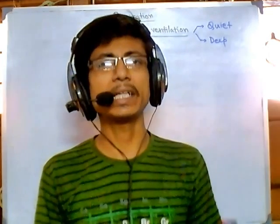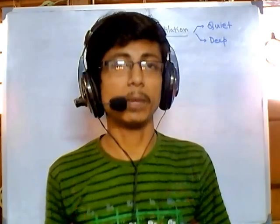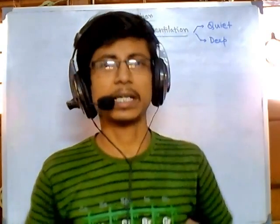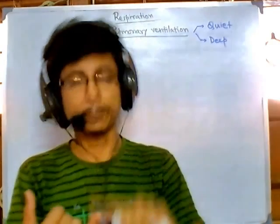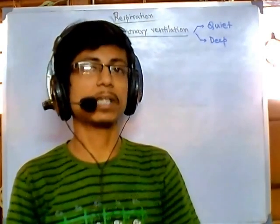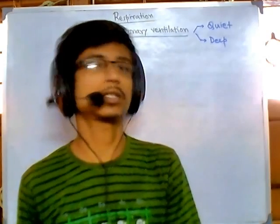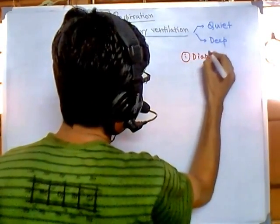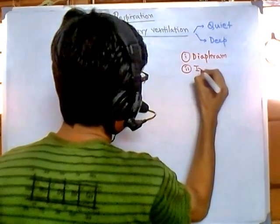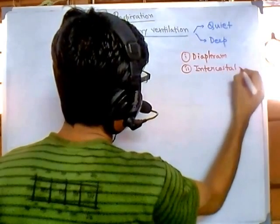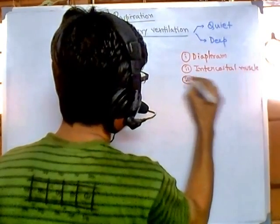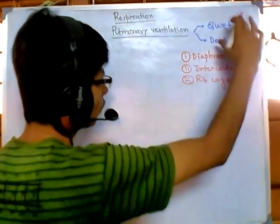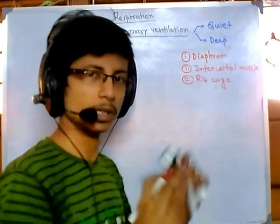All these breathing processes are maintained by muscles in your body. The pulmonary muscles and the diaphragm play key roles. Among all the muscles, your ribcage is also very important. Specifically, intercostal muscles and your diaphragm — these three things are the major structures controlling your breathing process. Additional muscles are involved for deep breathing but not for quiet breathing.